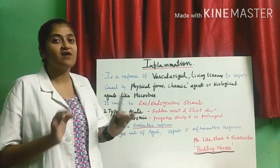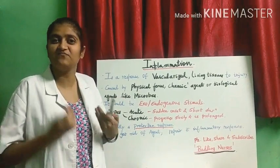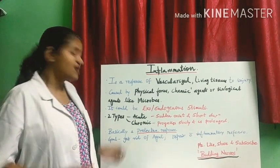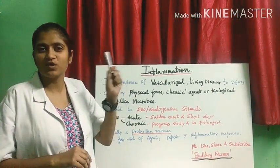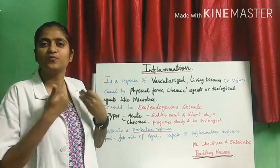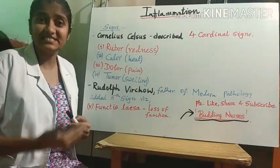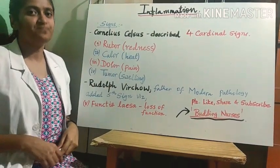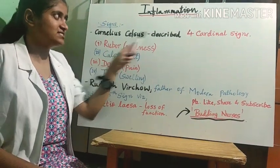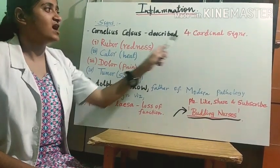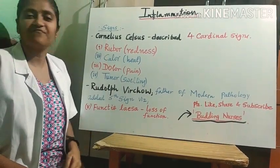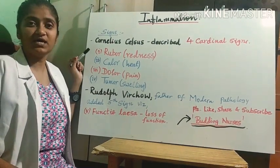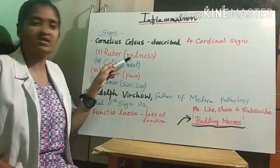Basically, inflammation is a protective body mechanism. The sole goal of inflammation is to protect our body. Now we will see what are the signs of inflammation. According to Cornelius Celsus, a famous Roman physician, he described four cardinal signs of inflammation.